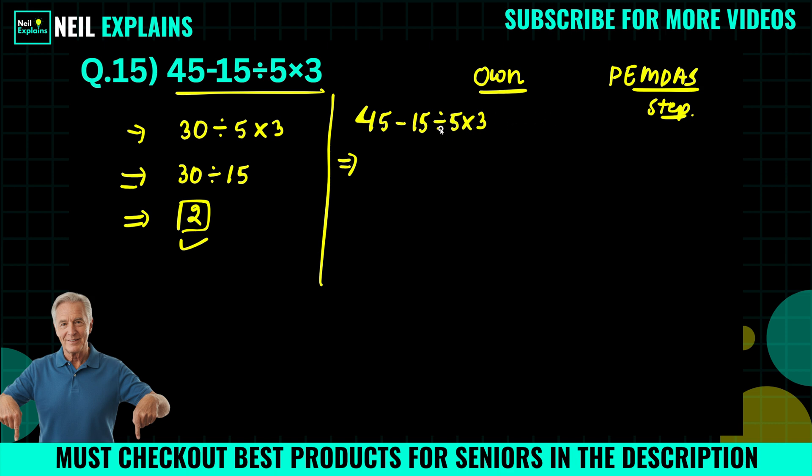Multiplication and division have the same priority, and in that case we have to solve from left to right. So we will solve this part from left to right, and we have to solve division first because this is on the left side.